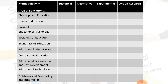From the methodology aspect, there are historical research, descriptive research, experimental research, and action research. Historical research describes 'what was'; descriptive research describes 'what is'; experimental research describes 'what will be'; and action research is the application of scientific method to current educational problems — though action research has a somewhat limited scope.